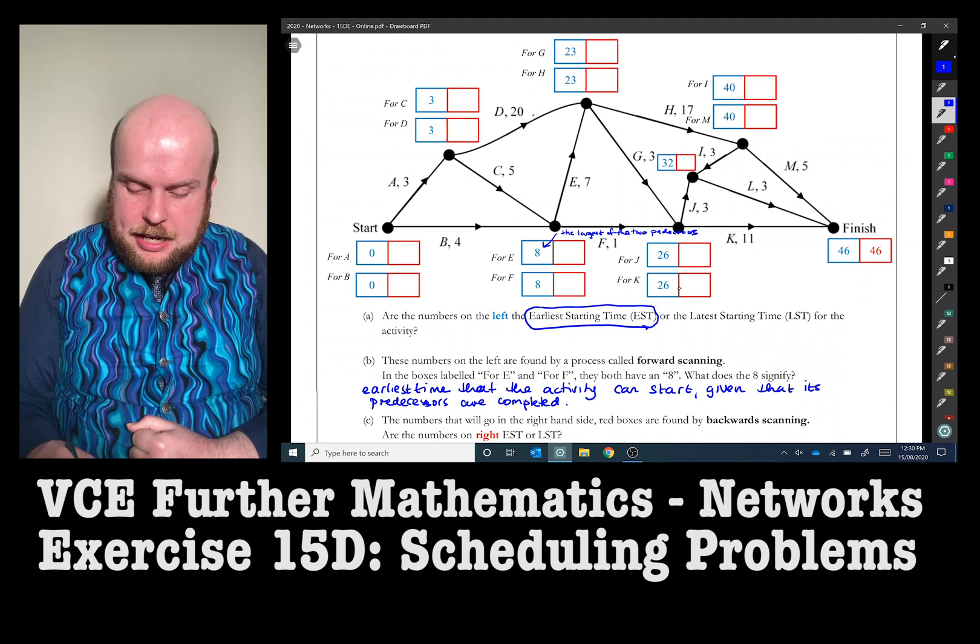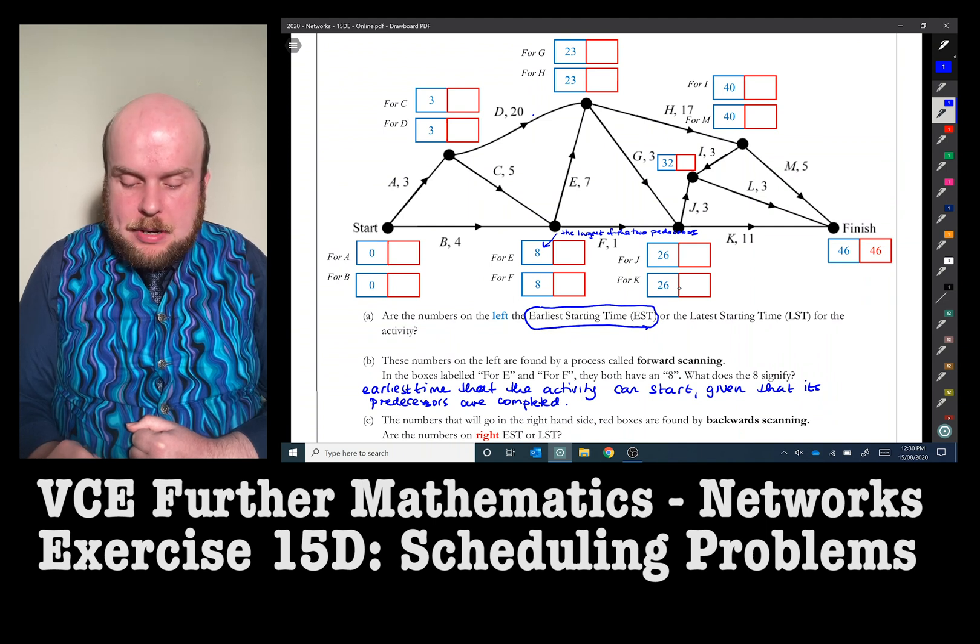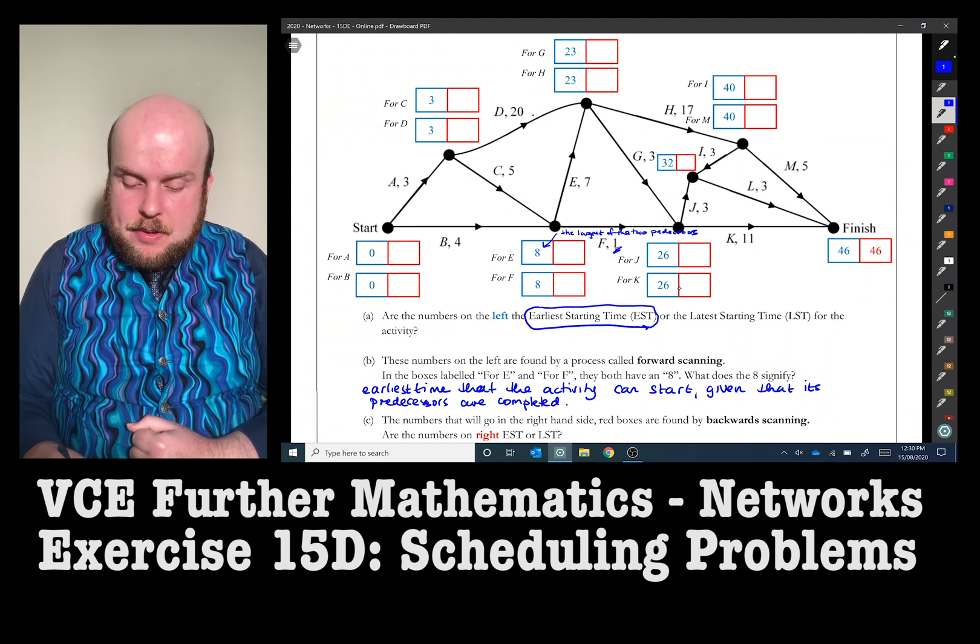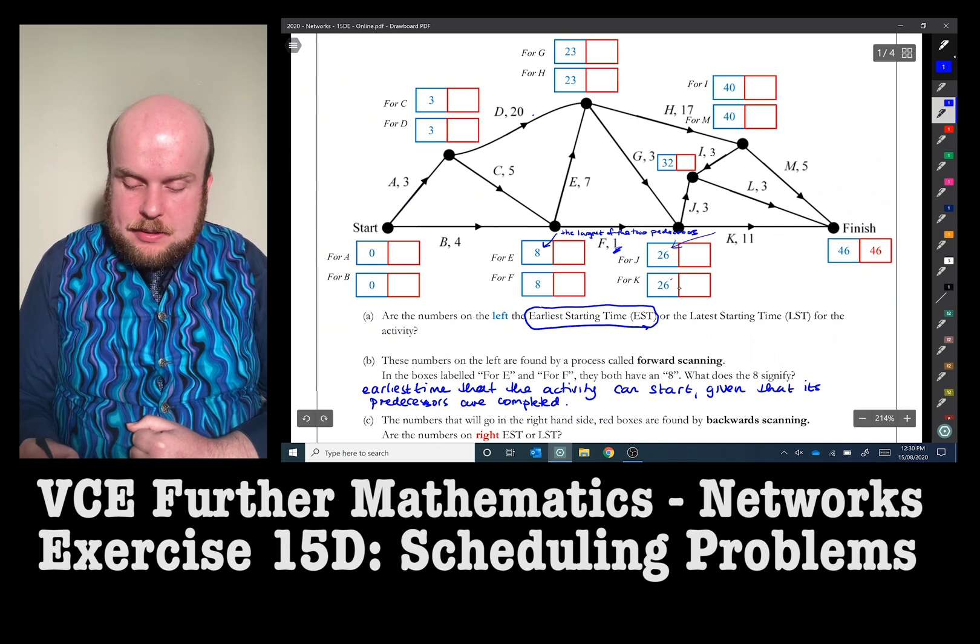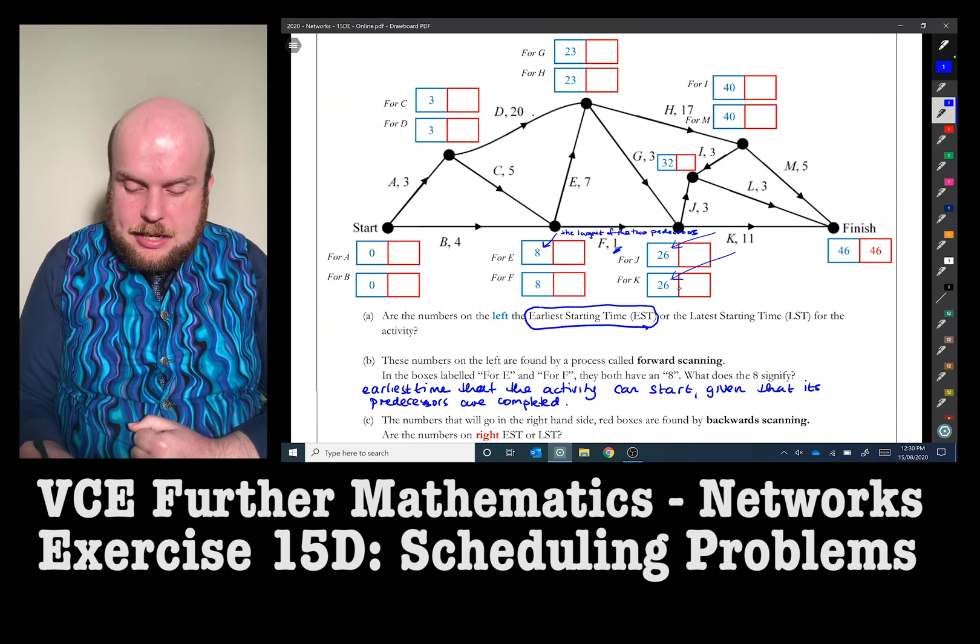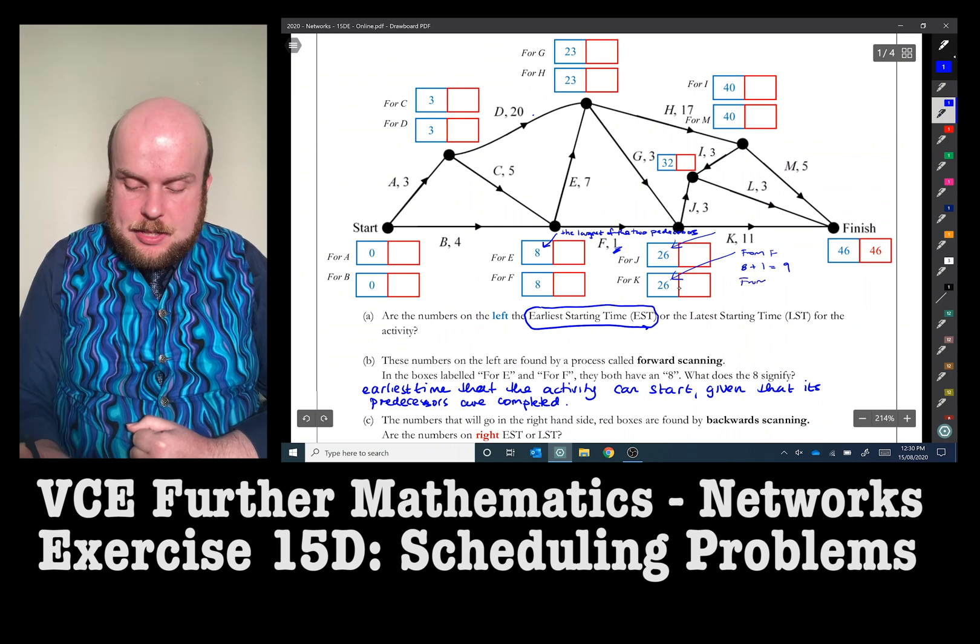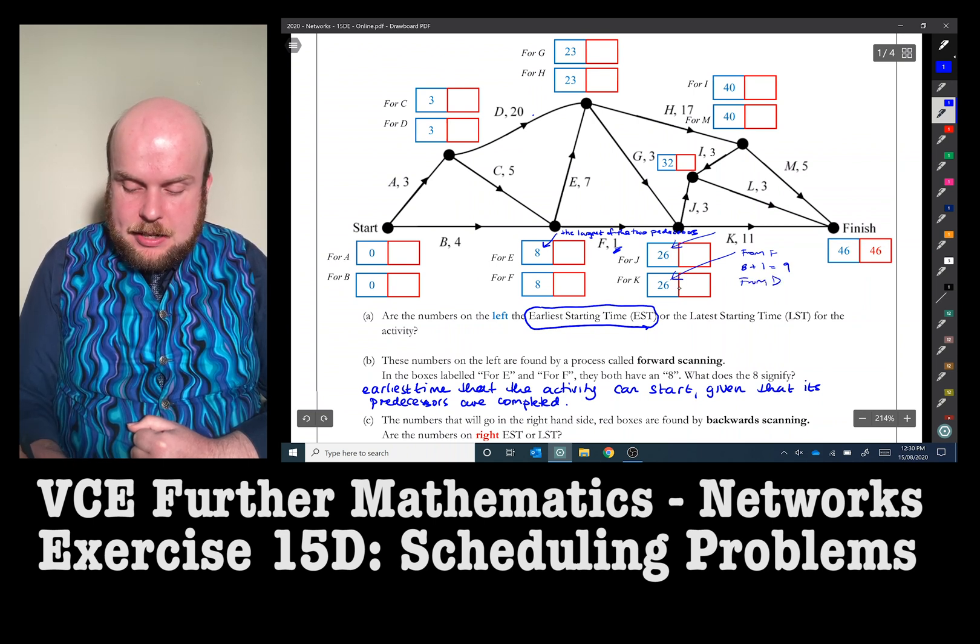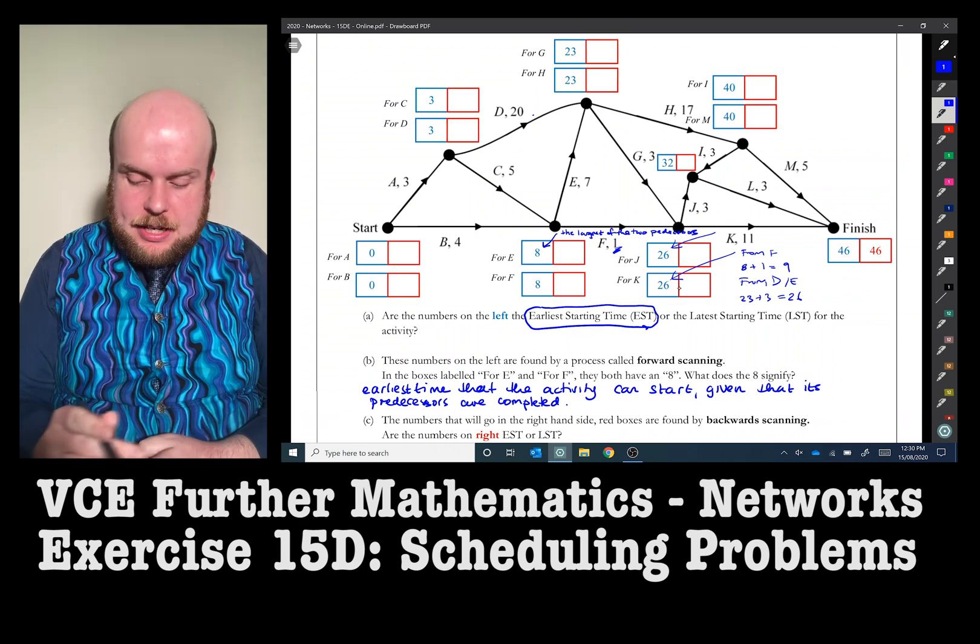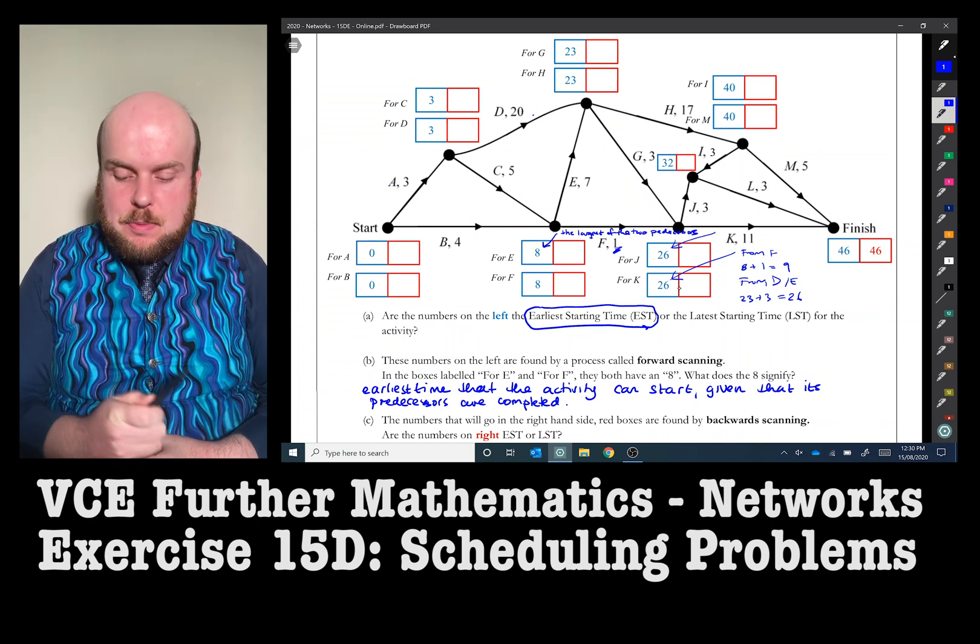And if I look at activity F here, to get that completed, it takes only one hour here. So eight plus one. So here, these two numbers, you'll notice they're all the same number. I can either to get to here, I can either come from F and that would be eight plus one, which is nine or from the other vertex from D slash E, it would be 23 plus three. And of course we pick, it's always dependent on the slowest activity. And the slowest activity of course is being held up at this juncture here. So that's why those numbers have to be 26.